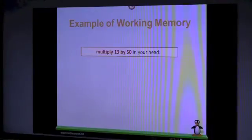One way to do that would be to break this up and first calculate 10 by 50, which is 500. This was the first processing part. We calculated 10 times 50, and now we have to keep in mind 500, 500, 500.